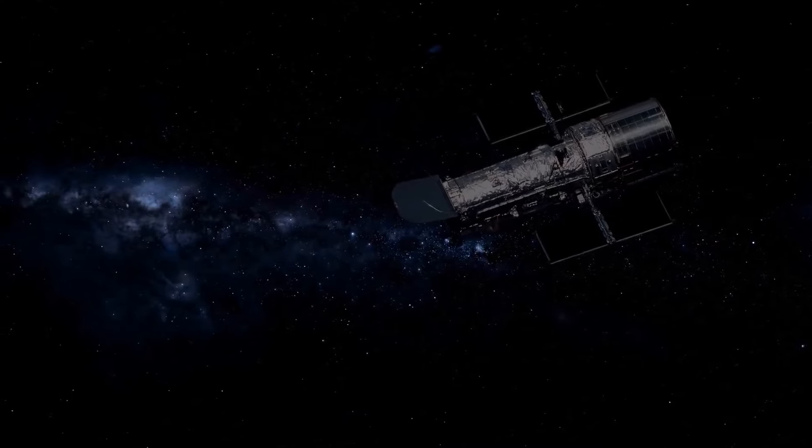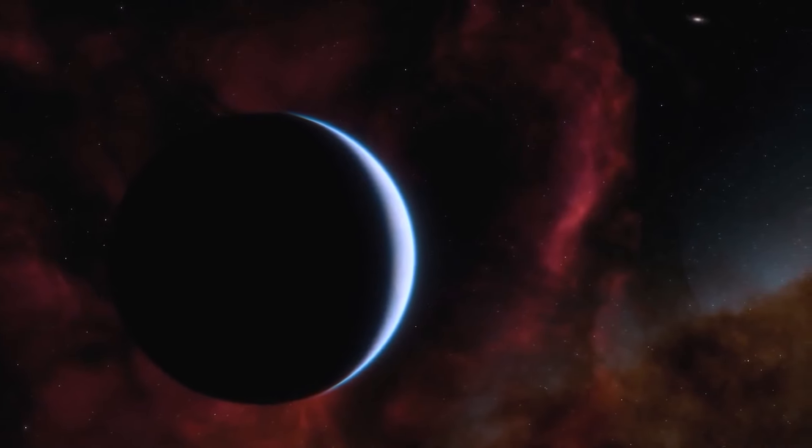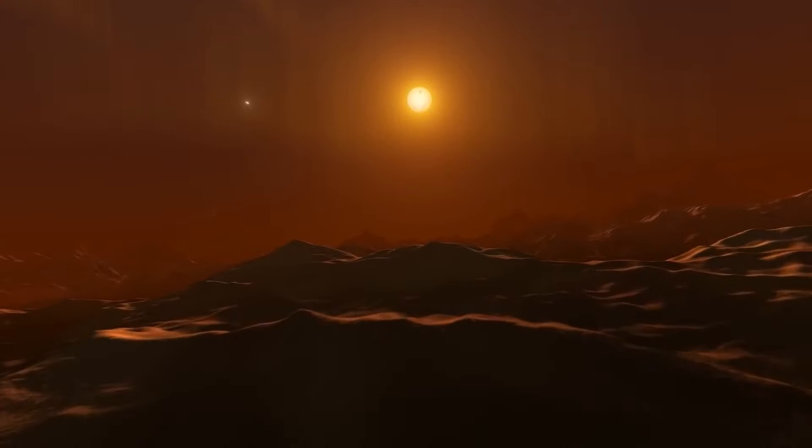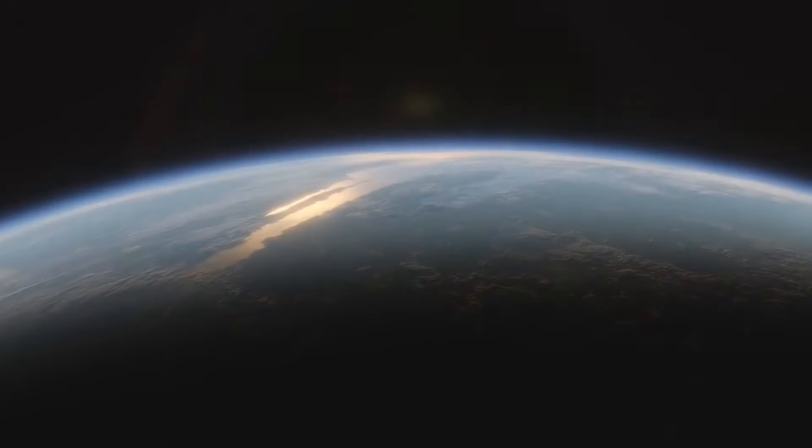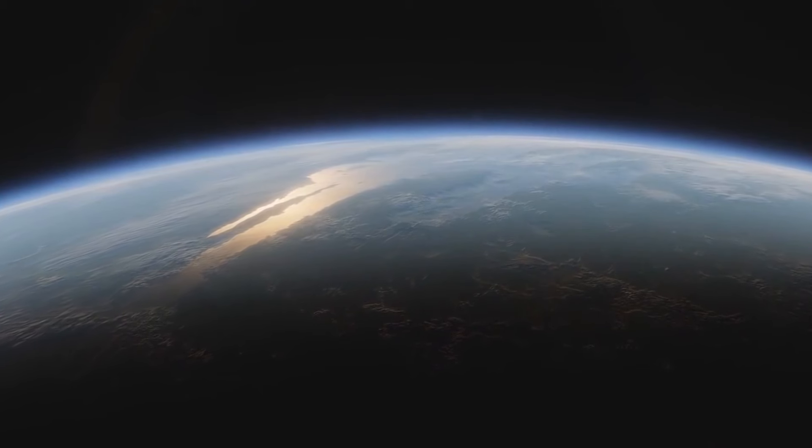However, subsequent research has revealed that the planet is indeed like an inhospitable mini-Neptune. In other words, it has a thick hydrogen atmosphere, a water-filled layer, and a rocky iron core, where temperatures and pressures are far too high to support life.